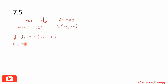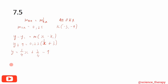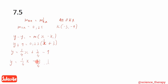Using point-slope form: y + 9 = 0.25(x + 3). Solving: y = (1/4)x + 3/4 - 9 = (1/4)x - 33/4. So the equation of line g is y = (1/4)x - 33/4.